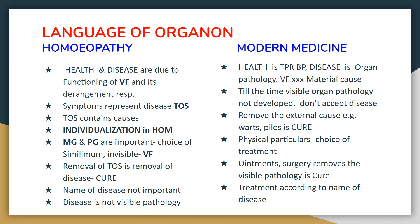In modern medicine, health is measured by temperature, pulse, respiratory rate, and blood pressure. Disease is nothing but organ pathology; they deny the existence of vital force, and material cause is the cause of disease. In homeopathy, symptoms represent disease in the form of totality of symptoms, and the totality of symptoms also contains causes. So removal of the totality is removal of the cause.